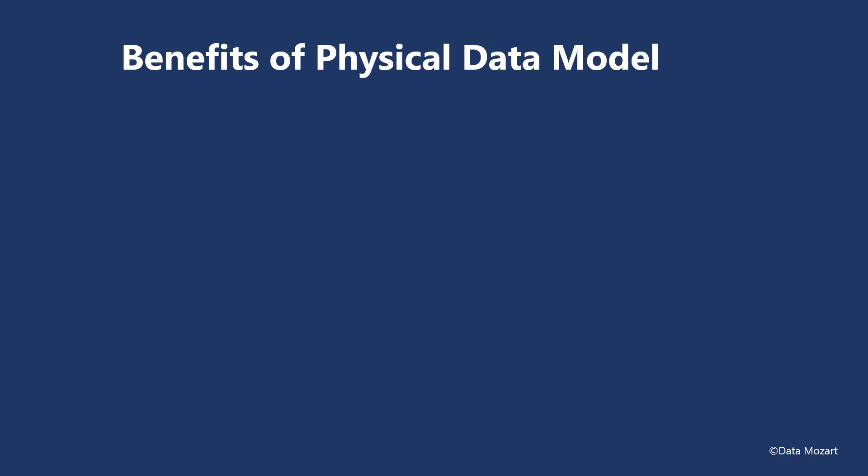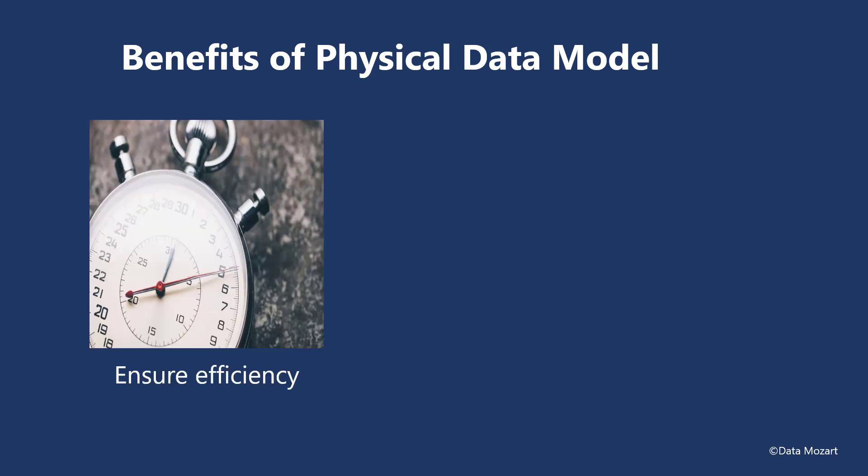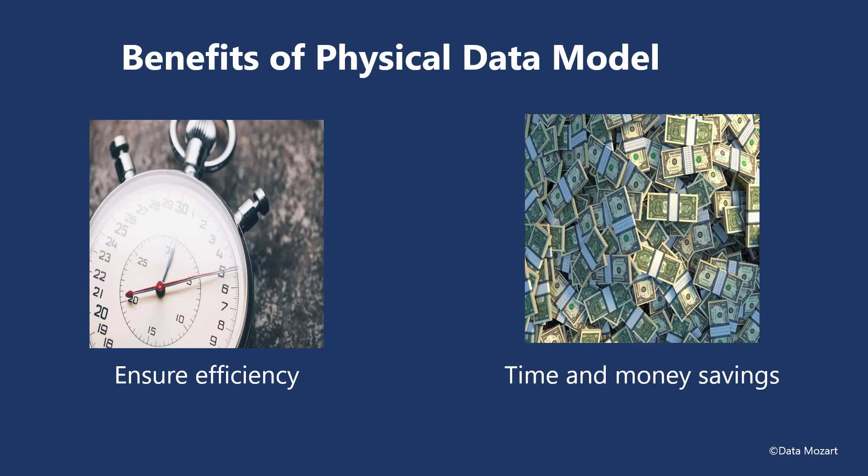With all points mentioned previously, the main benefit of having a physical data model in place is to ensure efficiency, optimal performance, and scalability. When we talk about efficiency, we are obviously having in mind the two most precious business assets — time and money — unless you think time equals money, in which case we have only one asset to consider. To simplify: the more efficient your data model is, the more users it can serve, the faster it can serve them, which in the end, in most cases, brings more money to the business.